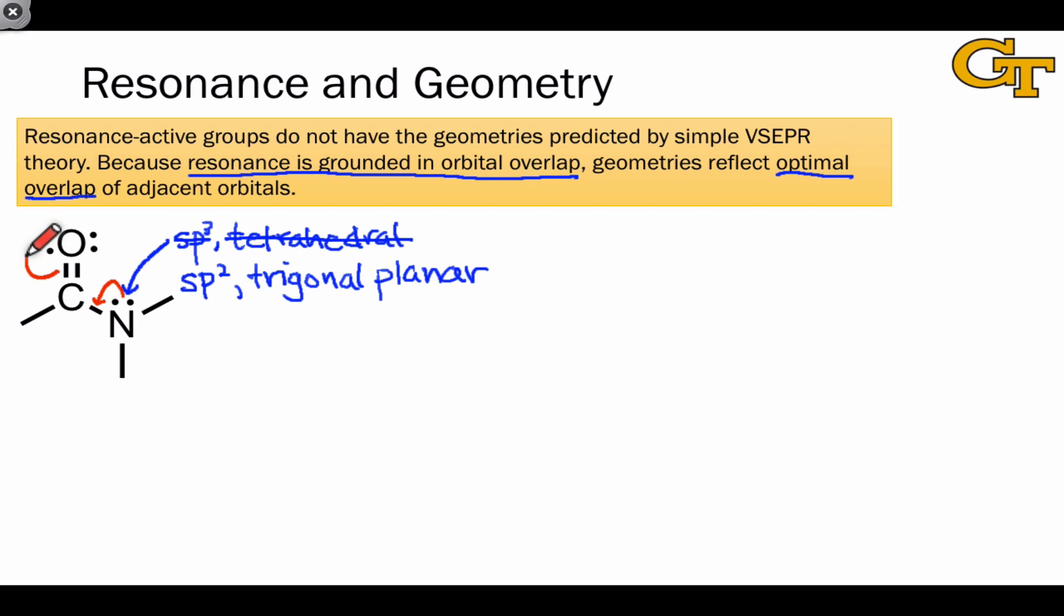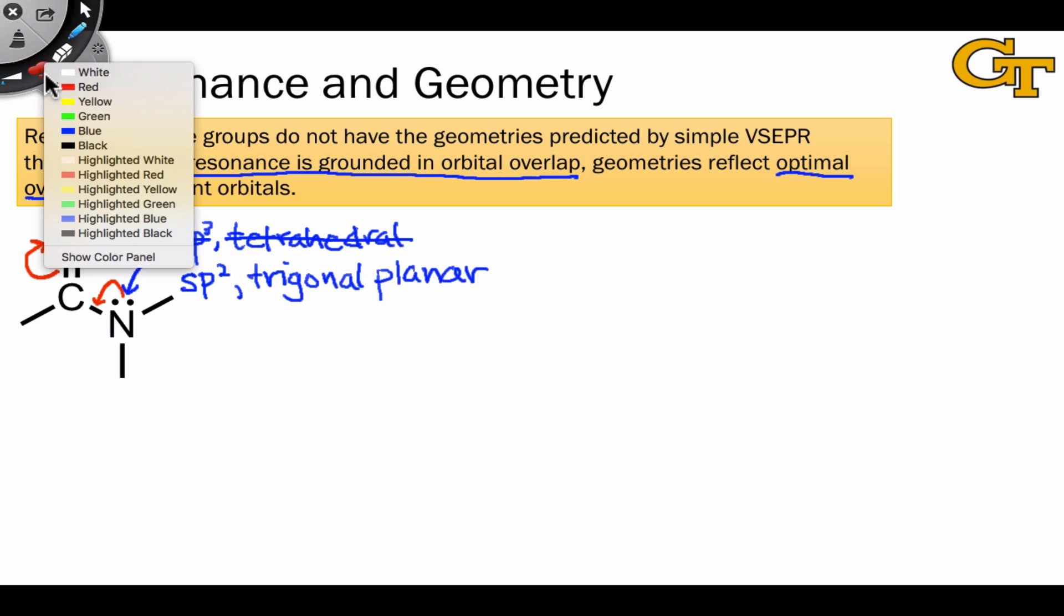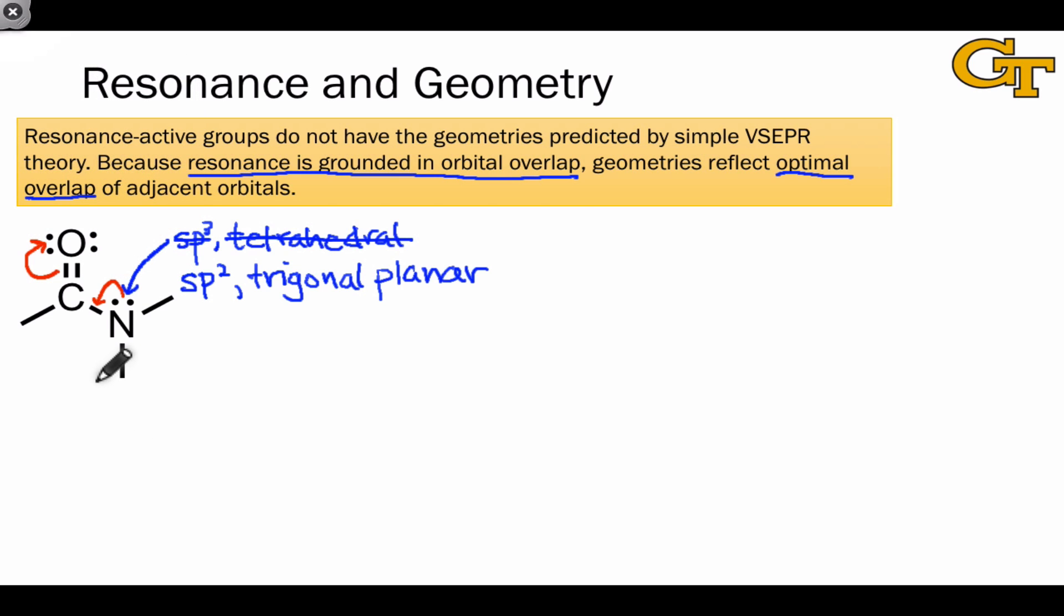We can draw a resonance structure using n to pi star electron flow, starting from the nitrogen as an electron source and using the oxygen atom as an electron sink. Notice in the resulting resonance structure that this nitrogen now has three electron pair domains, and so based on this resonance structure alone, we would predict that the hybridization of nitrogen is sp2 and that its geometry is trigonal planar. Why is this the resonance structure that dictates the geometry rather than the one above?